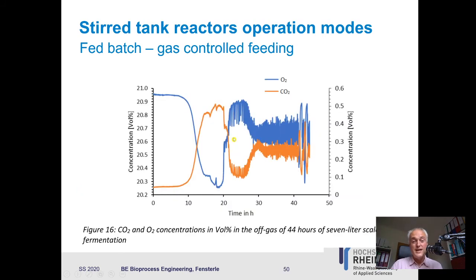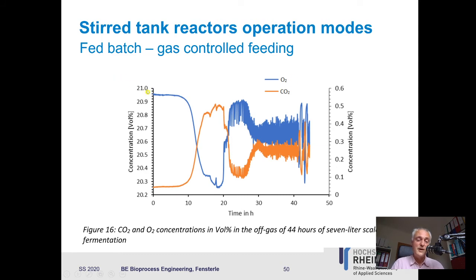Here is an example from our lab — a bachelor thesis producing biopolymers. The problem was that the substrate has low solubility and is also partially toxic to the microorganisms, so we needed to keep it at a certain concentration. The microorganisms grow much slower than E. coli. At a certain time point we started the pumps and pumped in the substrate whenever oxygen dropped. We measured oxygen and carbon dioxide concentrations in the off-gas.